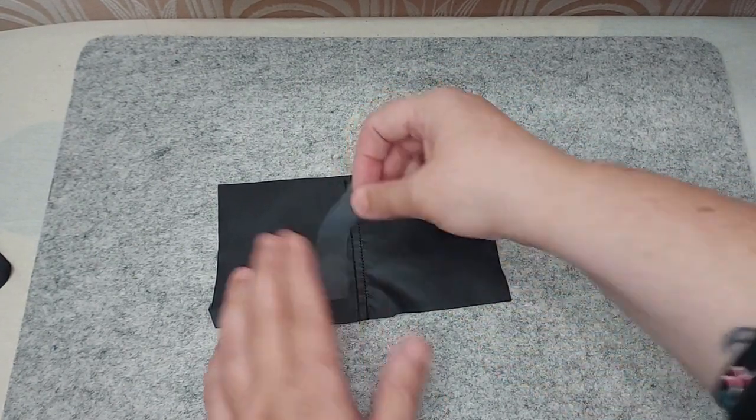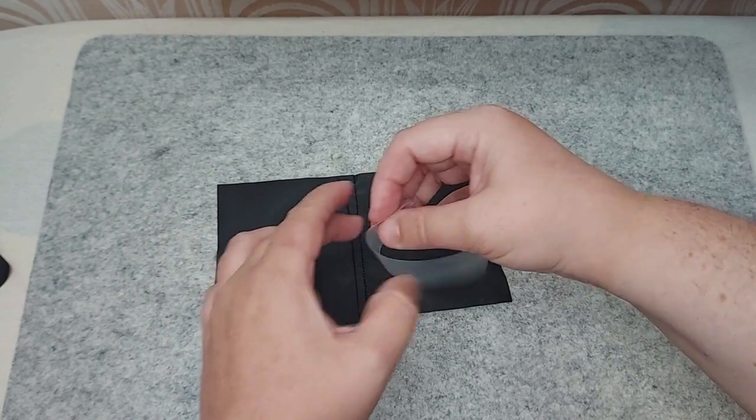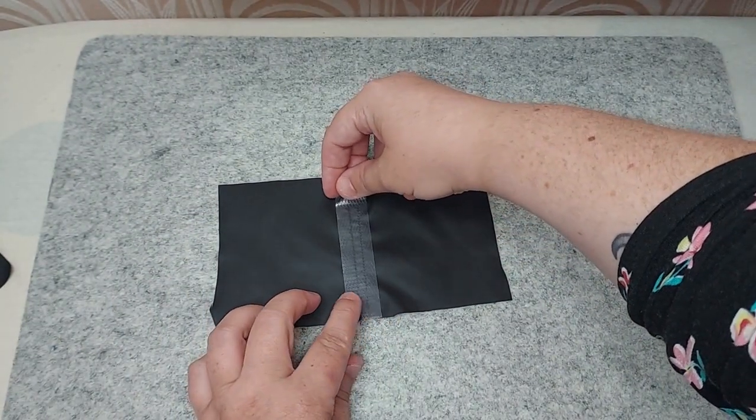Feel for the glue on the back of the piece of seam seal tape and place the glued side onto the wrong side of the fabric.